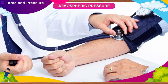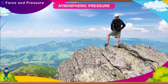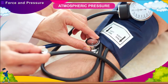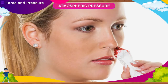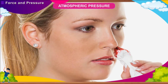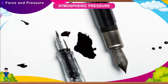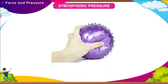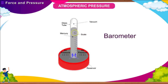The pressure of blood in our vessels is called blood pressure. At higher altitudes, atmospheric pressure decreases; however, blood pressure remains the same. As a result, blood may start flowing out through the nose, causing nosebleeds. Fountain pens also start leaking at higher altitudes. A pressed rubber sucker does not come off because of atmospheric pressure. Atmospheric pressure is measured using a barometer.